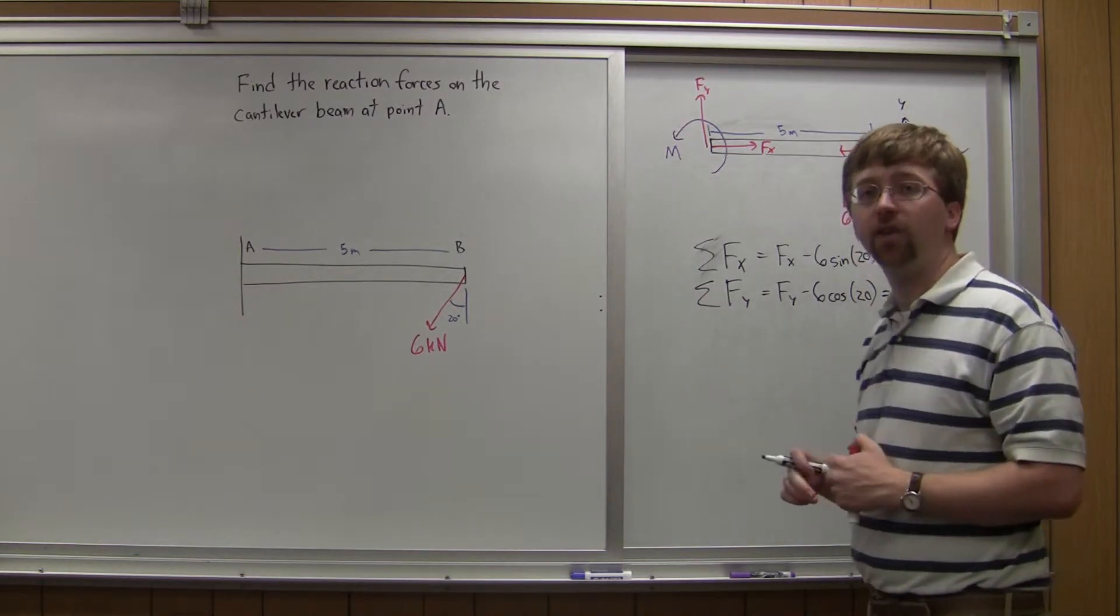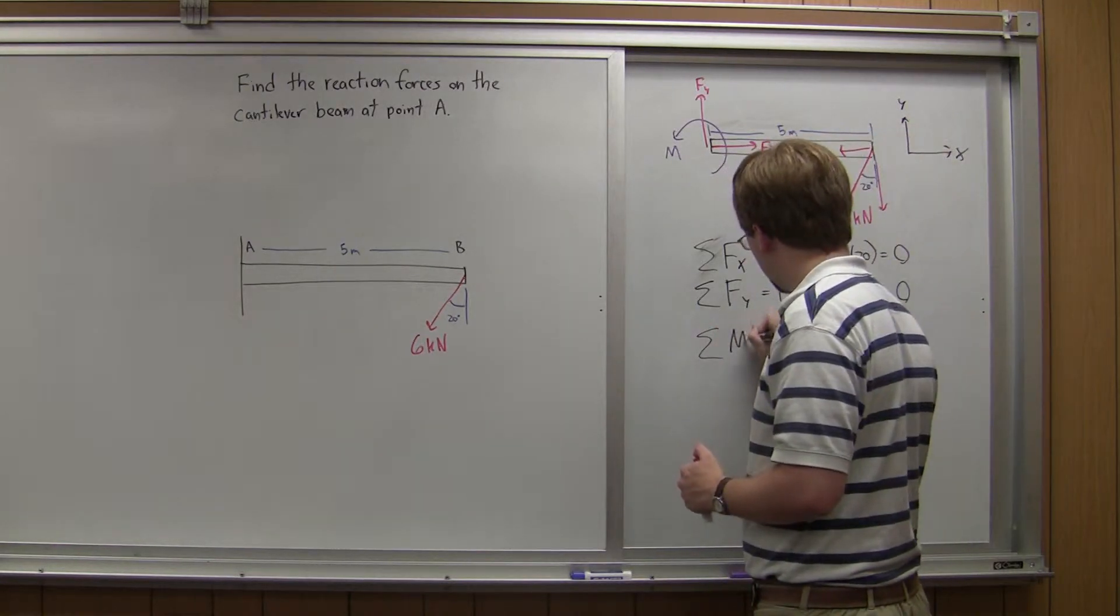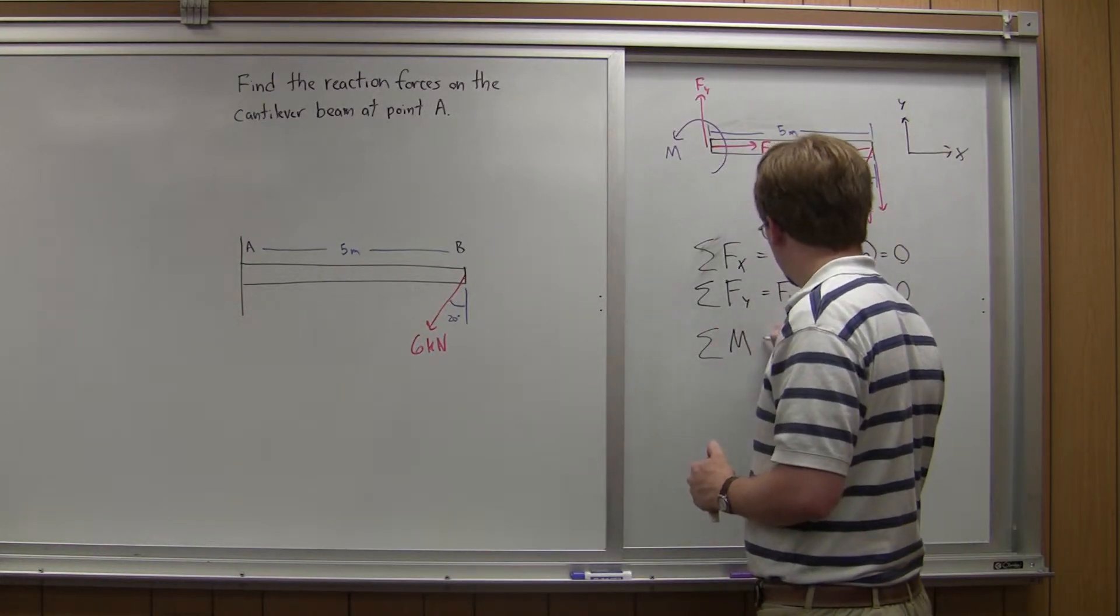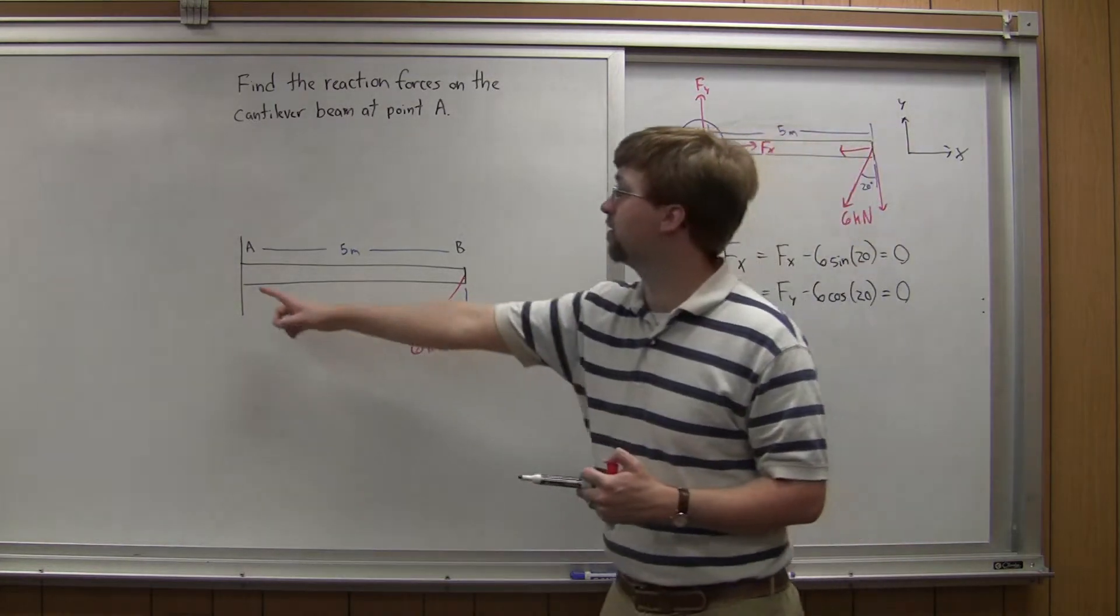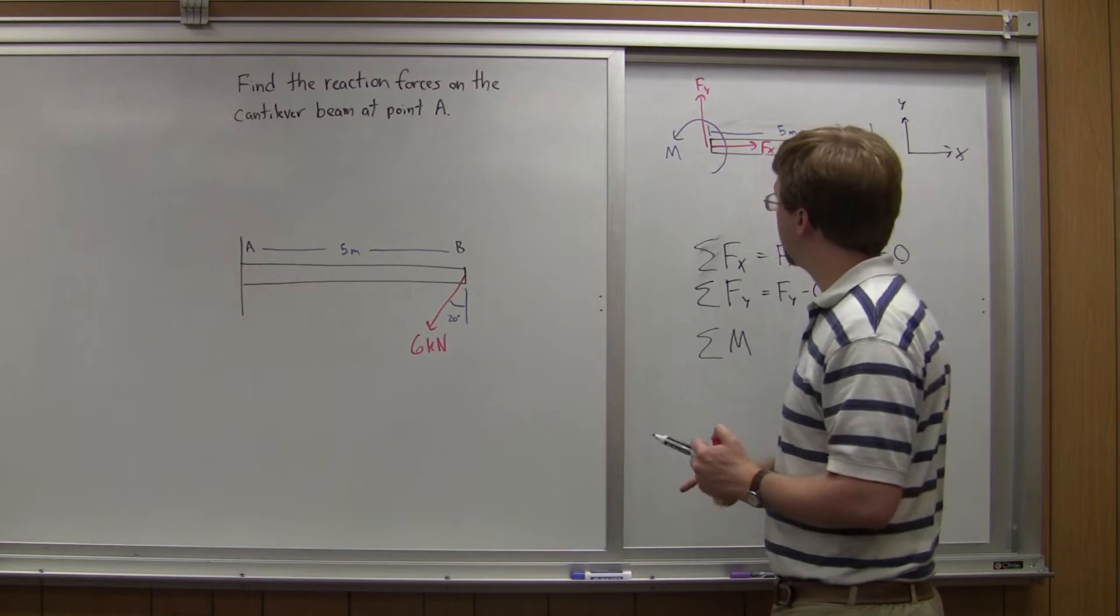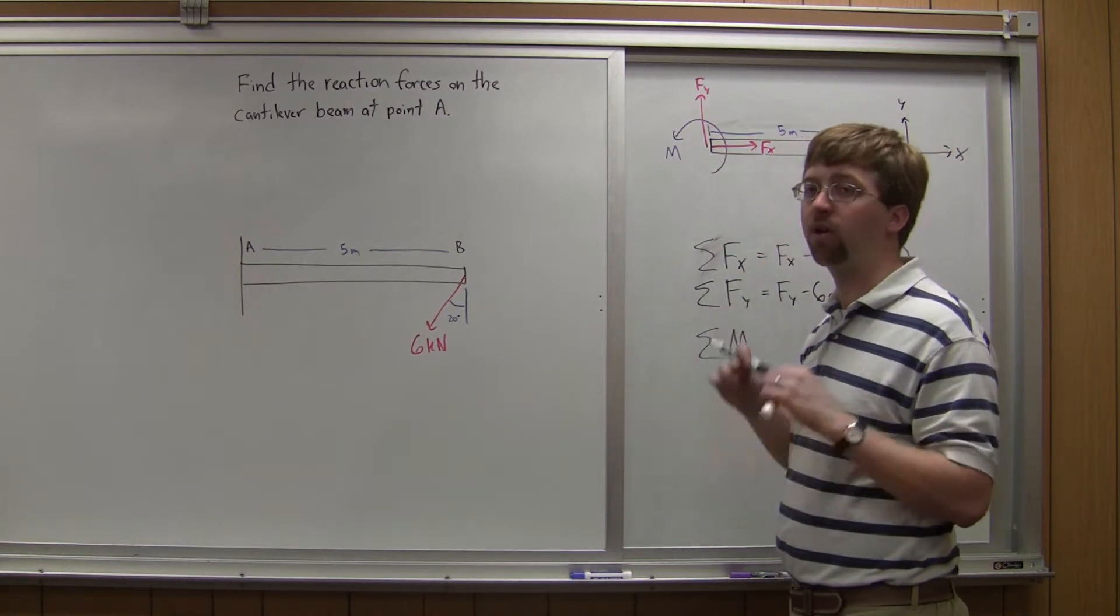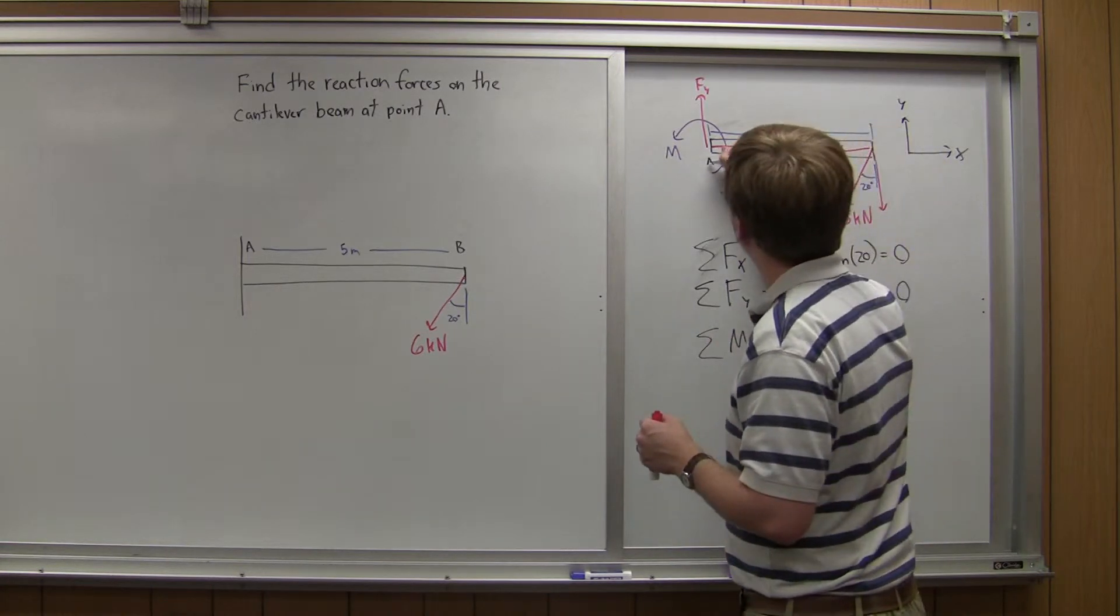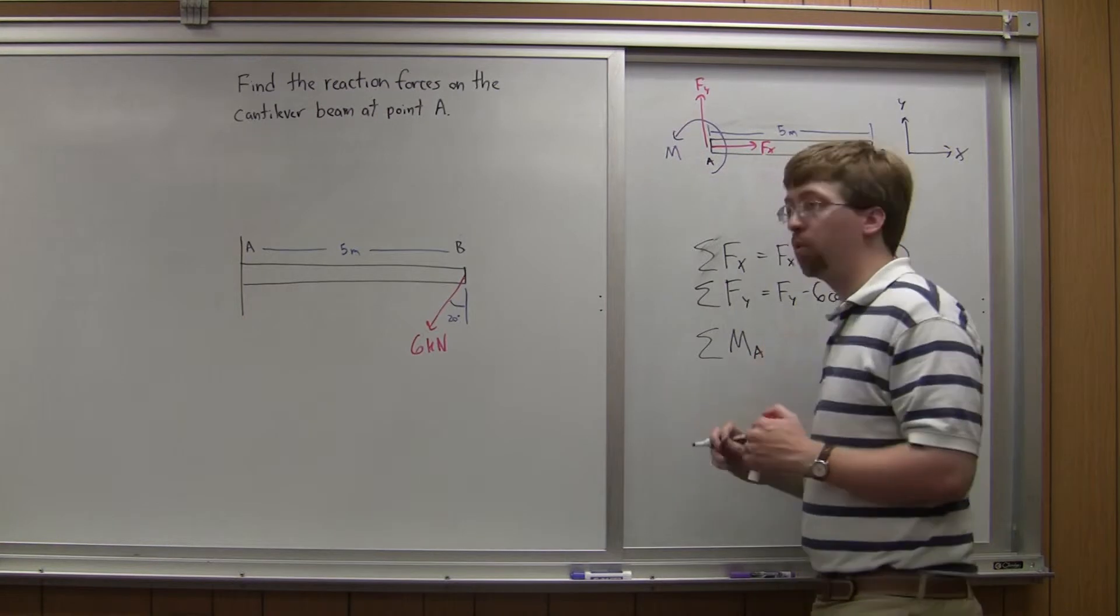And then, finally, I need to take the moment. Sum of moments, and I need to choose a point. I've got really two options, side A or side B. Since I've got so many unknowns over here, it's usually useful to take the moment about a point where you have a lot of unknowns. I'm going to take the moment about point A.